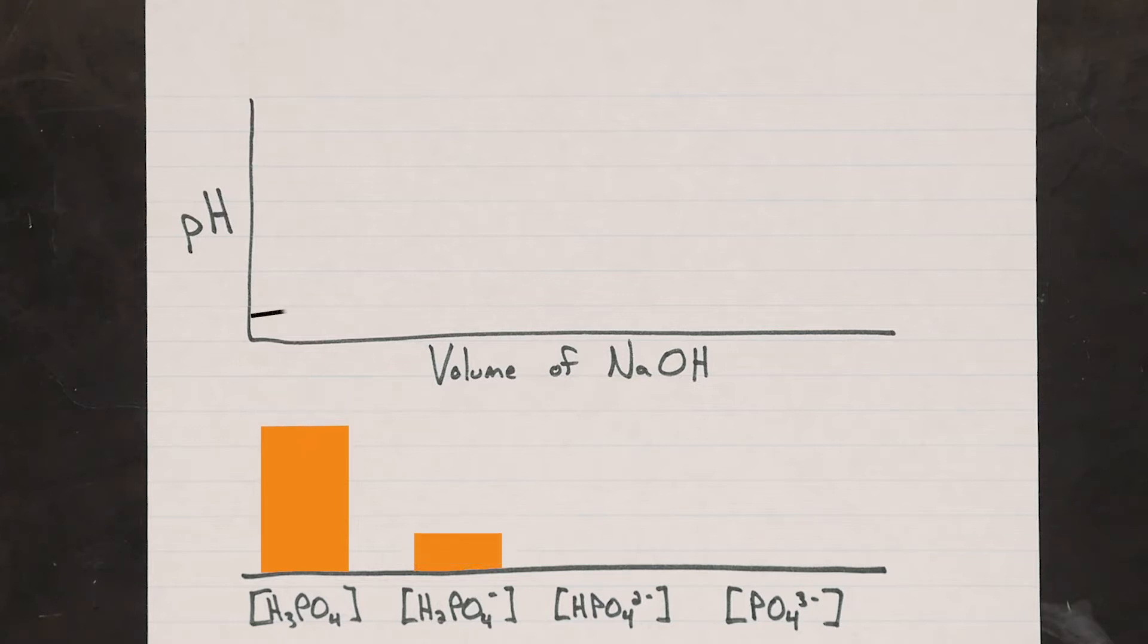Sooner or later, as more phosphoric acid molecules turn to dihydrogen phosphate, their concentrations will balance out. And we call this the half-neutralization point, since half of the phosphoric acid has been neutralized. This is exactly when the pH will tell us what our pKa is.